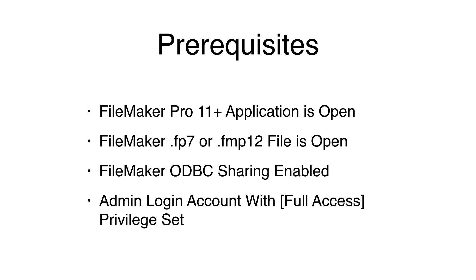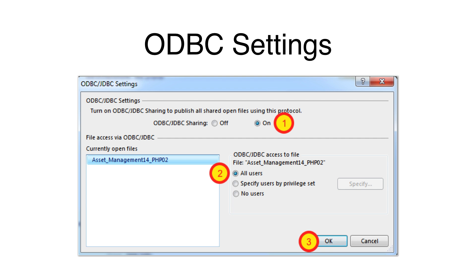In order to connect to a FileMaker database, the FileMaker application and your FP7 or FMP12 database file must be open. Select the File Sharing Enable ODBC/JDBC menu to enable sharing for each database file for all users. Make sure that you use a FileMaker login account having the full access privilege set.